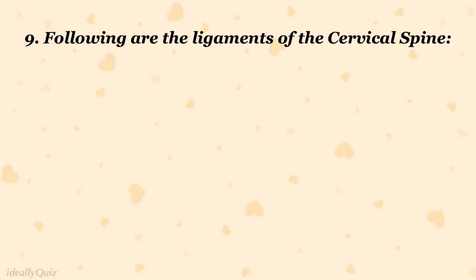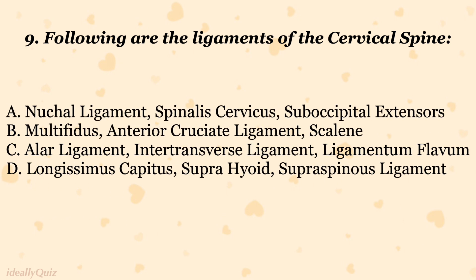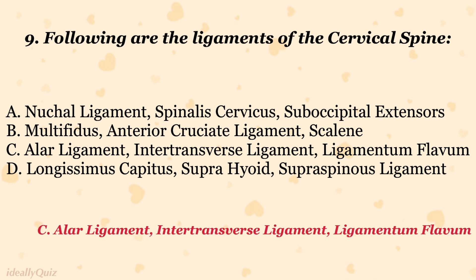Which of the following are ligaments of the cervical spine? A. Nuchal ligament, spinalis cervicis, suboccipital extensors. B. Multifidus, anterior cruciate ligament, splenius. C. Alar ligament, inter-transverse ligament, ligamentum flavum. D. Longissimus capitis, suprahyoid, supraspinous ligament. The correct answer is C. Alar ligament, inter-transverse ligament, ligamentum flavum.